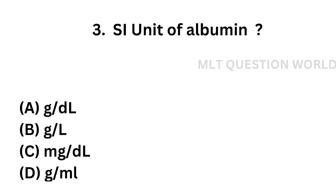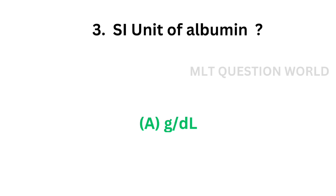Question number three: SI unit of albumin — Option A: gram per deciliter, Option B: gram per liter, Option C: milligram per deciliter, Option D: gram per ml. The correct answer is Option A — gram per deciliter. The SI unit of albumin is gram per deciliter.